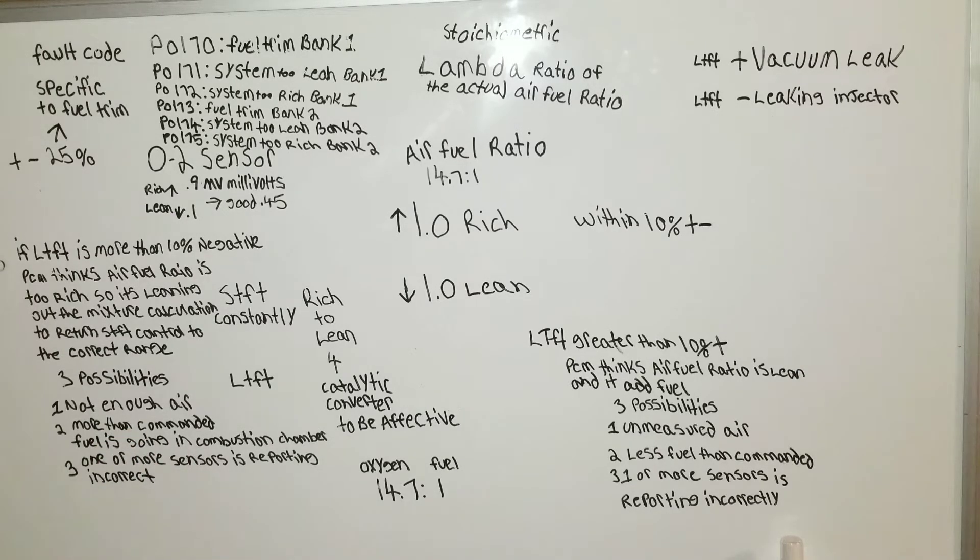If you have long term fuel trim that is more than 10% negative, the PCM thinks the air fuel ratio is too rich, so it's leaning out the mixture calculation via short term fuel trim control to the correct range.